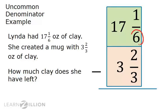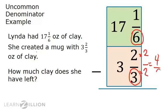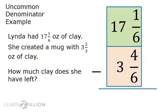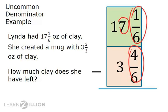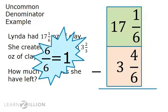The least common multiple of 6 and 3 is 6, so we simply need to change the bottom fraction. We will multiply by 2 over 2, which is equal to 1, creating 4 sixths. Now we will look to see if we need to regroup. Because we are subtracting 4 sixths from 1 sixth, we will need to look to the ones place to regroup.